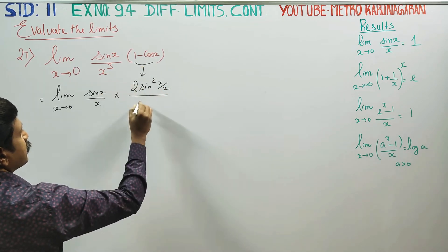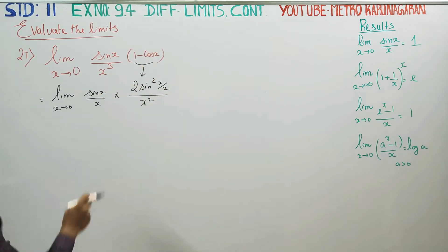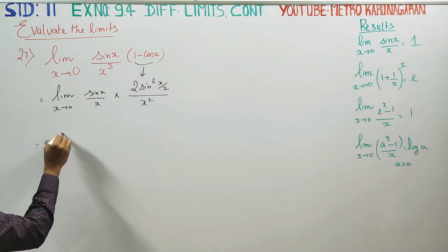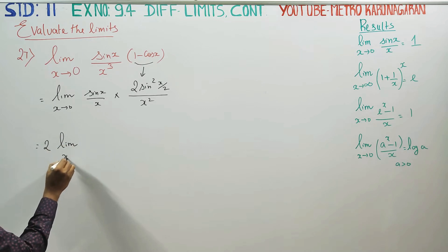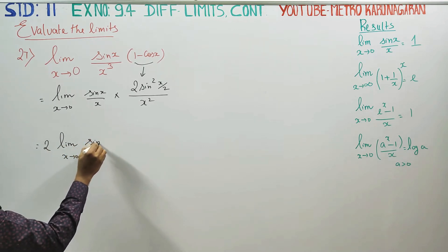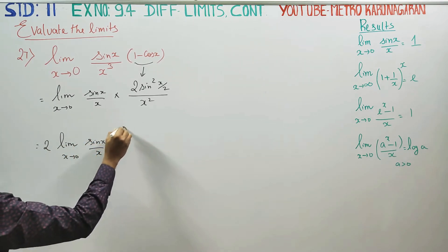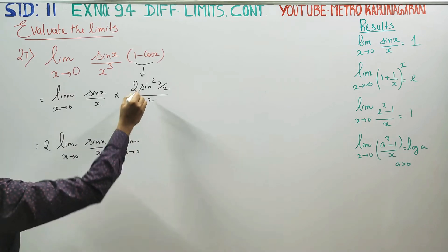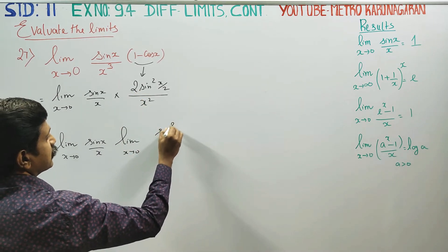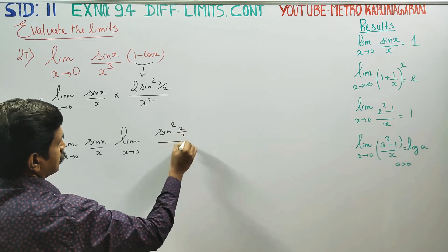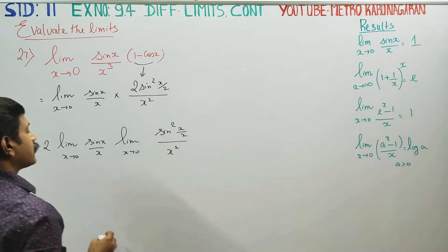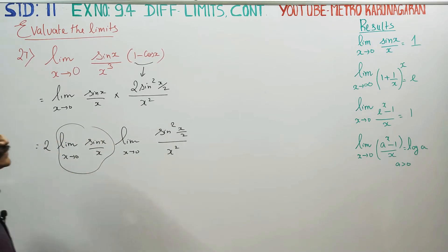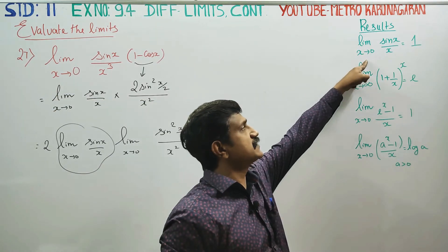Divided by x squared. Limit x turns to 0 of sin x by x. This can be written as sin squared x by 2 divided by x squared. As x turns to 0, sin x by x equals 1, giving 1 minus cos x as the result.